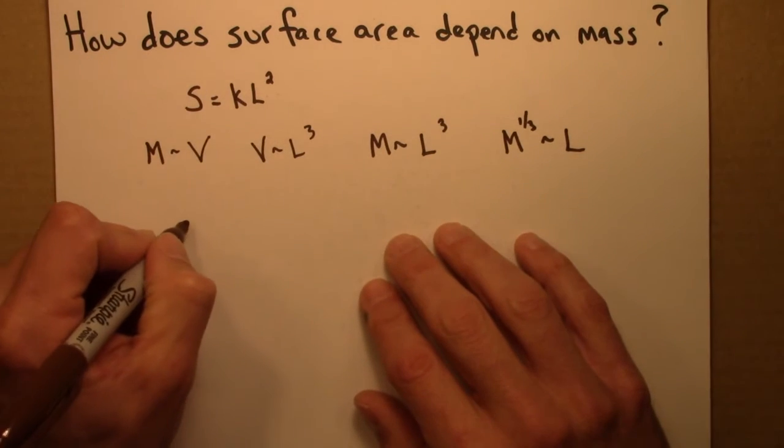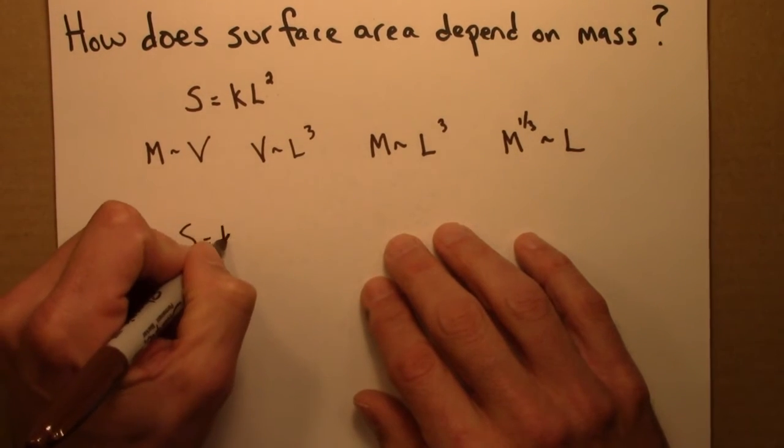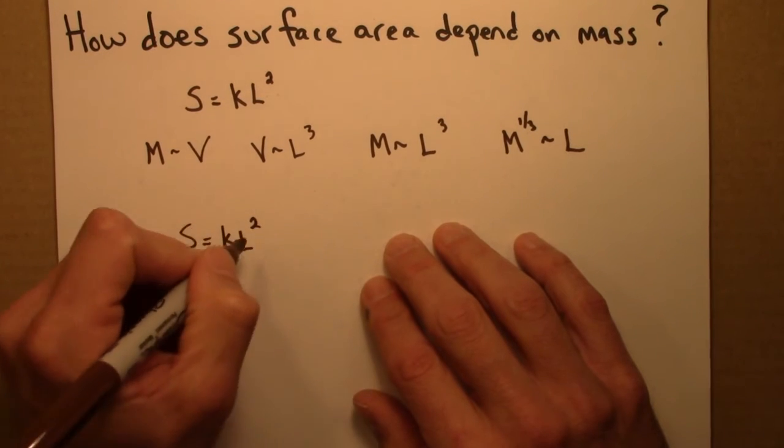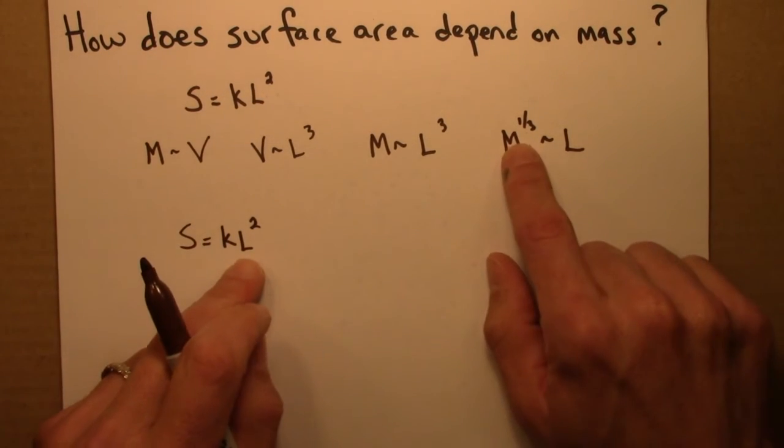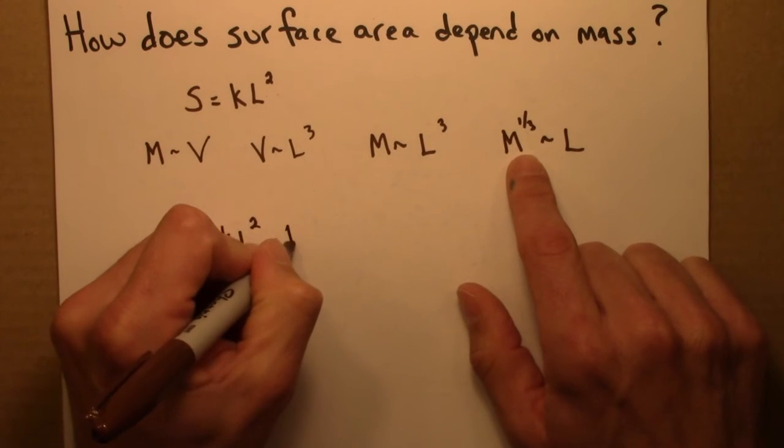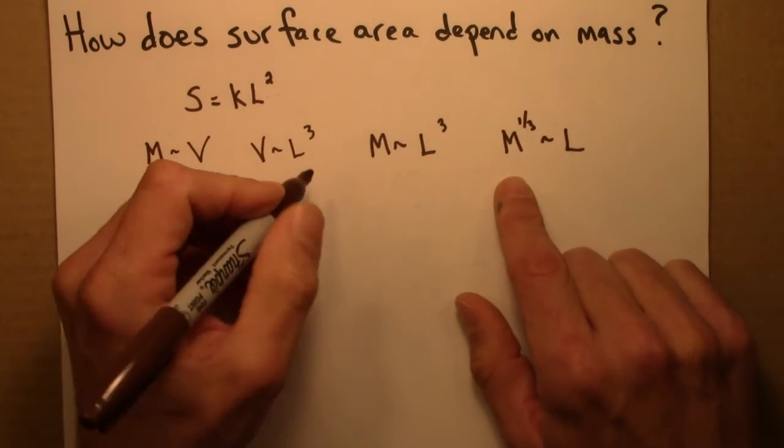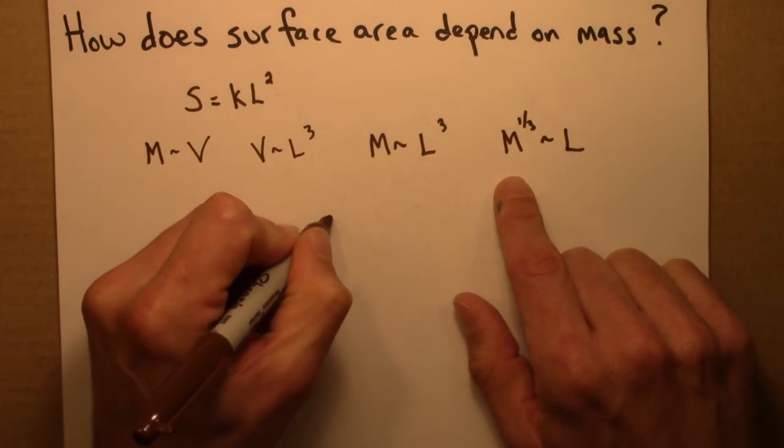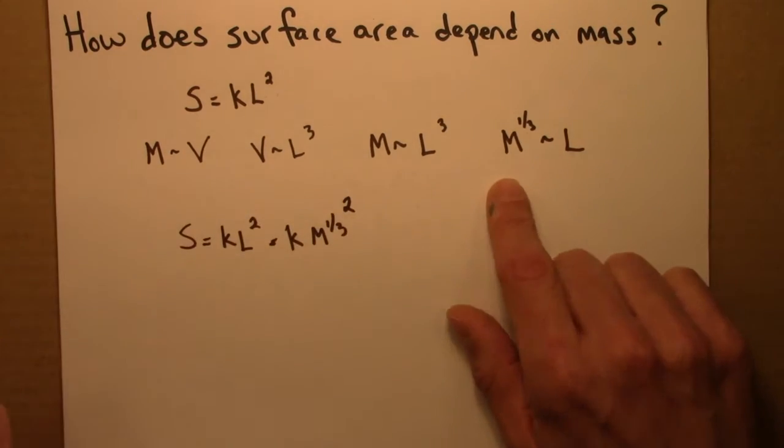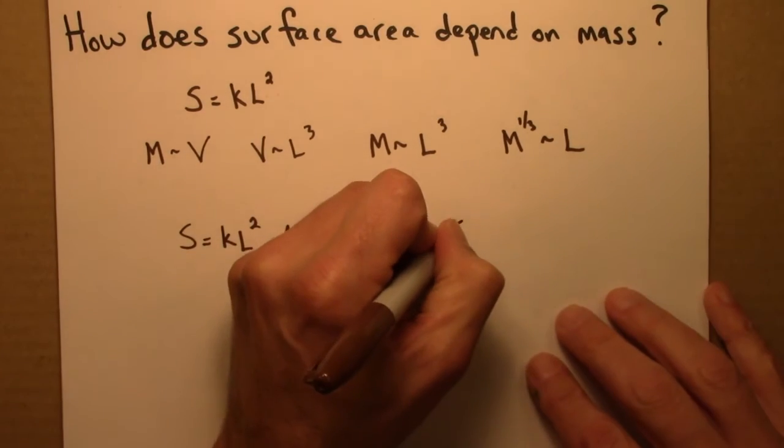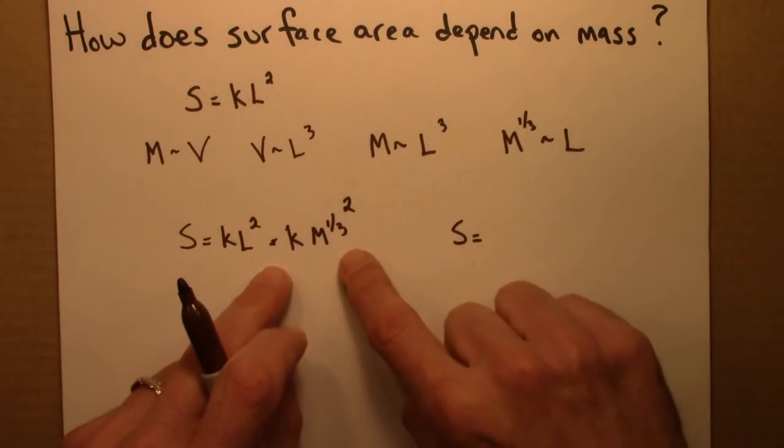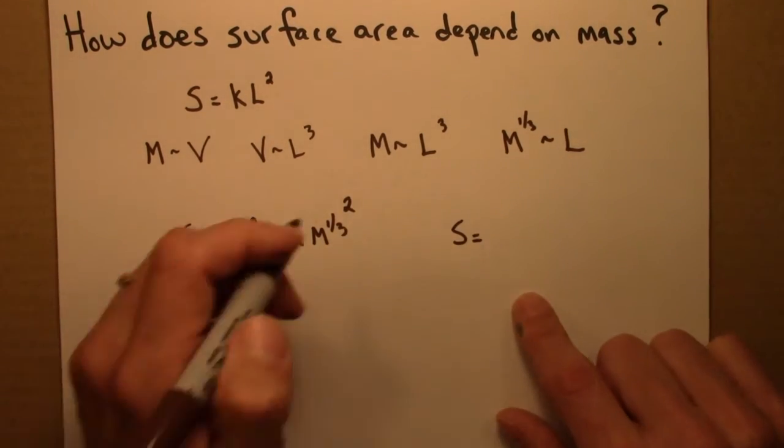Surface area is proportional to L squared, but L is M to the third, or it's proportional to it. So M to the third squared, and that gives me this relationship. We multiply these exponents.